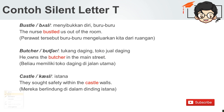Selanjutnya, sama diapit oleh S dan L: 'bustle' — menyibukkan diri, buru-buru. The nurse bustled us out of the room. Perawat tersebut buru-buru mengeluarkan kita dari ruangan. Kemudian, 'butcher' — di sini T dan C cara pengucapannya hampir mirip, maka kita hilangkan T-nya. Ini mengindikasikan apabila ada dua silabel, silabel pertama diakhiri huruf T dan silabel kedua diawali huruf suara C, maka kita hilangkan suara T-nya. Tukang daging. He owns the butcher shop in the main street.